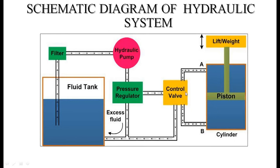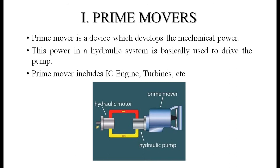If the control valve directs fluid to the B-side, it enters the bottom of the cylinder and pushes the piston upward, while the fluid above the piston is taken back through pipe A to the fluid tank. The hydraulic pump is connected to a prime mover such as an electric motor, allowing linear displacement of the piston as needed.